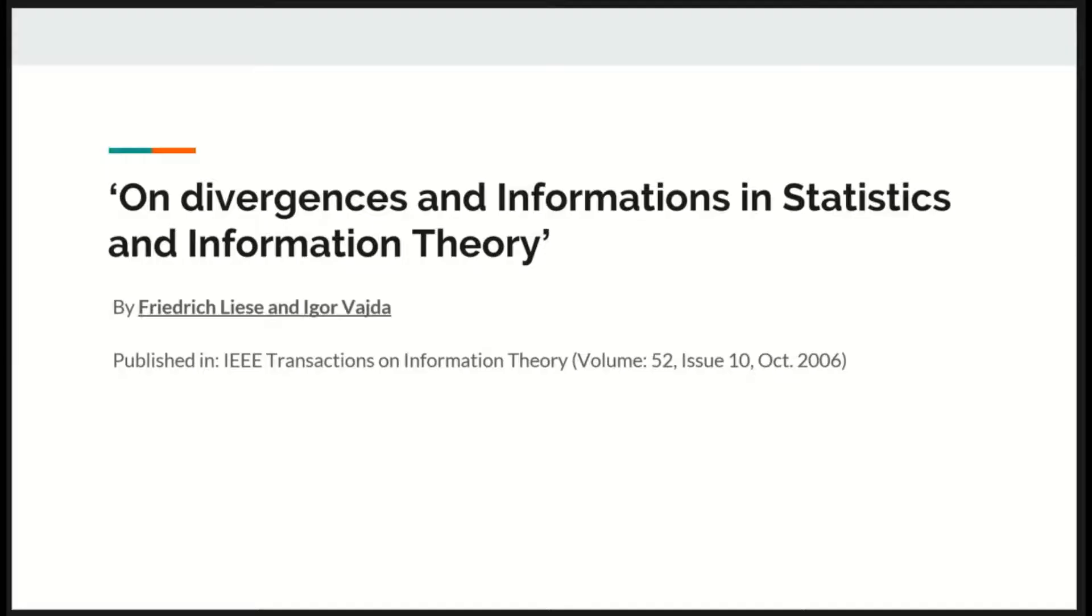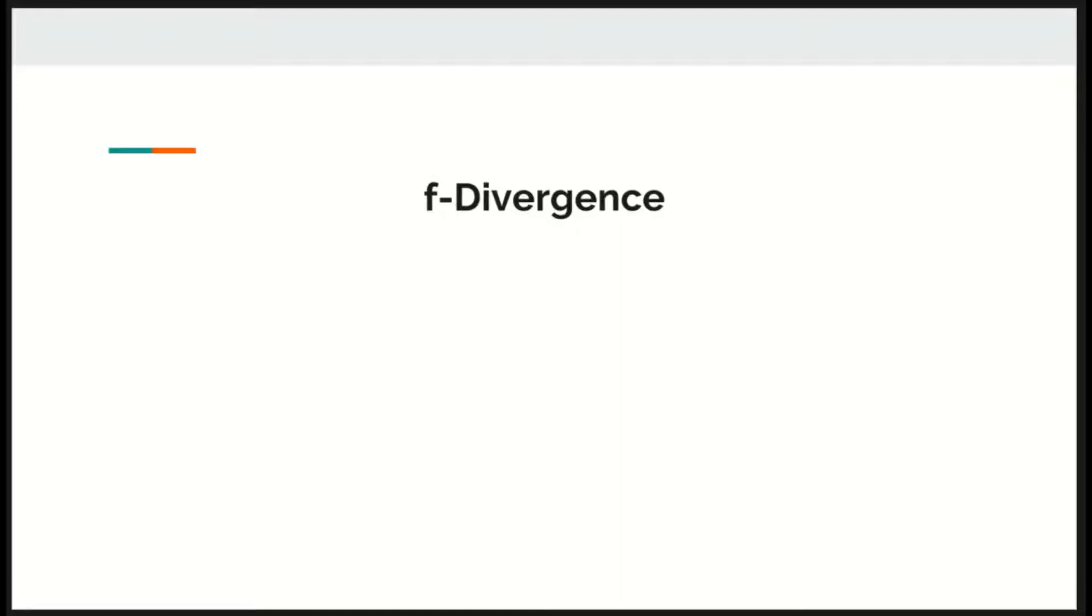Hi, this is Sachin Varun Krishna presenting on properties of F-divergence and information measures. This presentation is a review of the paper on Divergences and Informations in Statistics and Information Theory by Federis Lees and Igor Vagda.